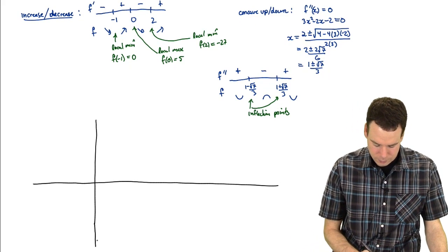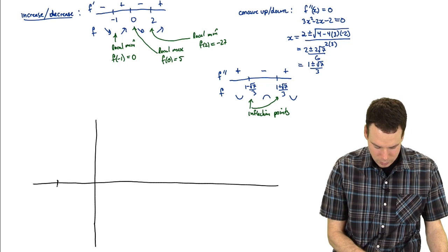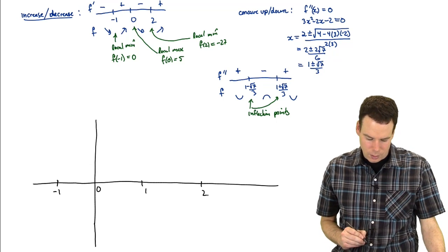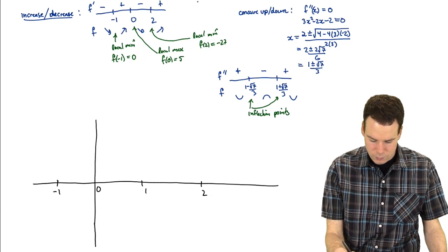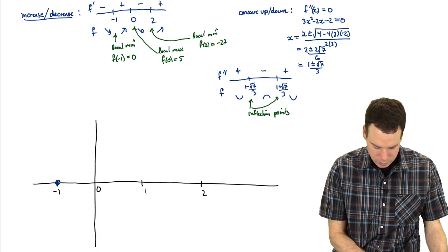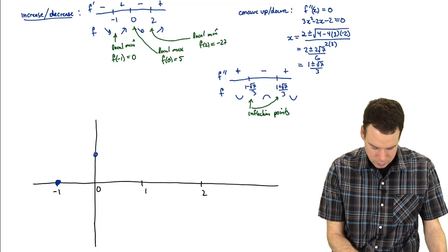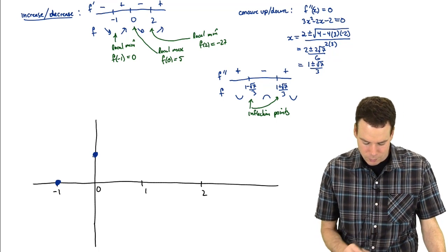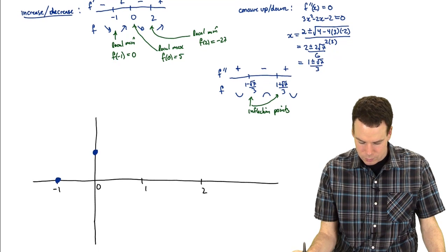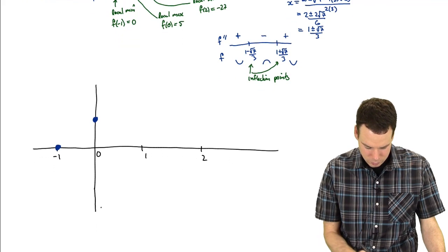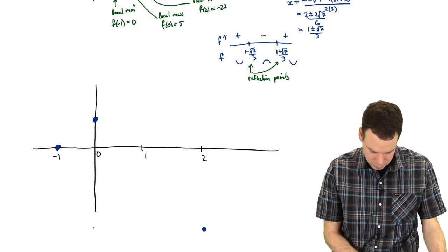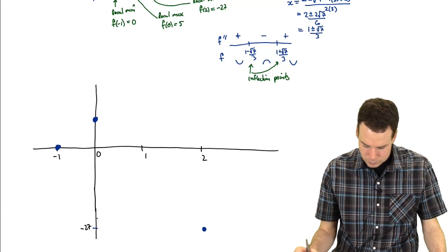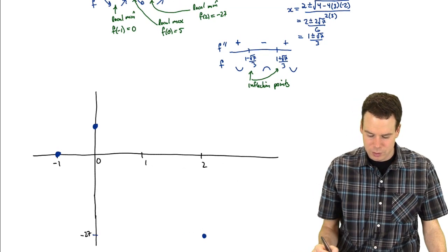We've got interesting stuff happening at -1, 0, and 2. The function value at x=-1 is 0 (local min), at x=0 is 5 (local max), and at x=2 is -27 (local min). We've got to pass through those points and connect them up.